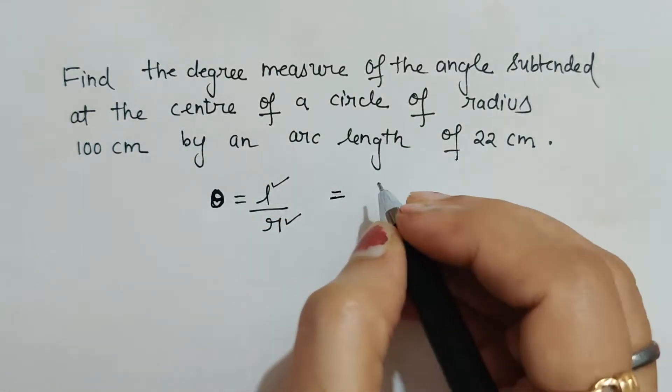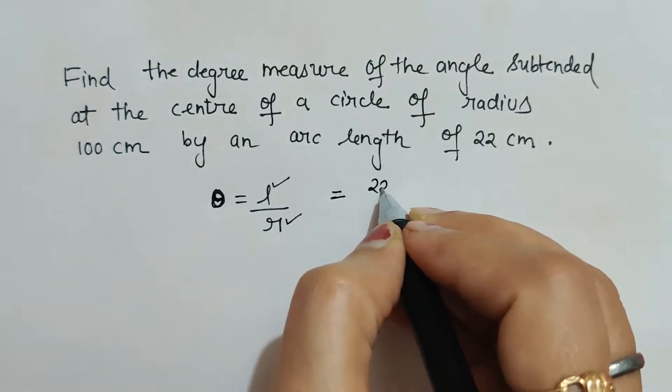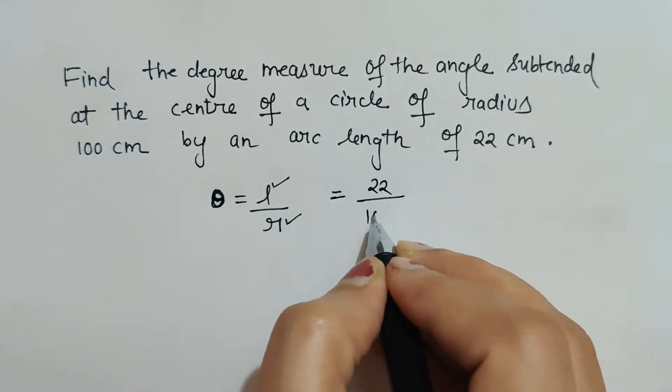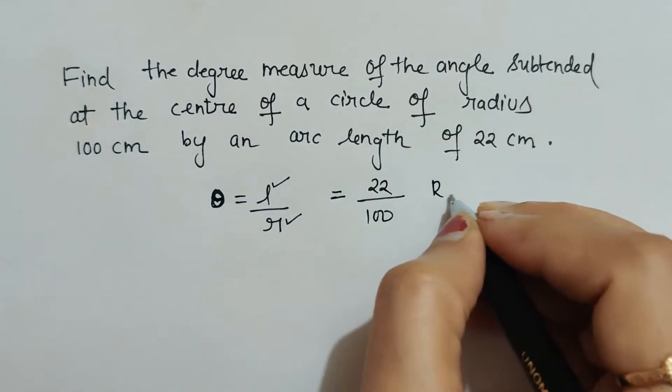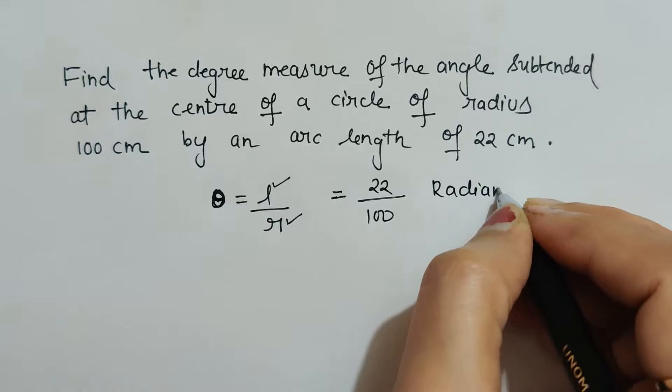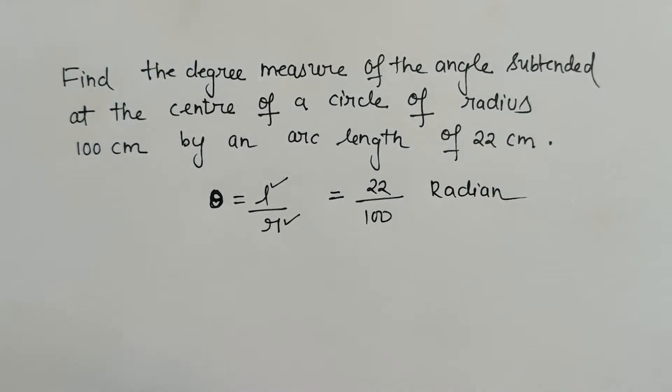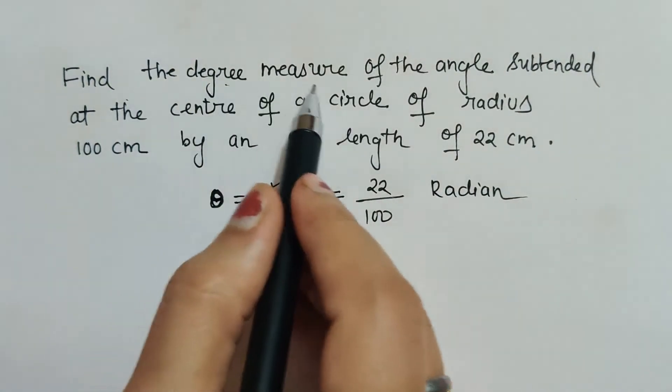Once we put arc length as 22 upon radius as 100, this is in radian. Now we have to solve this for degree because we need to find the degree measure of the angle.